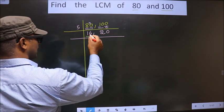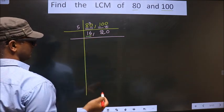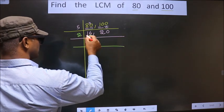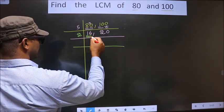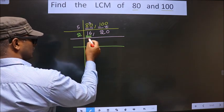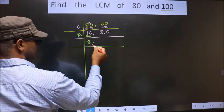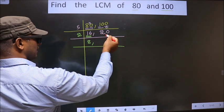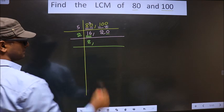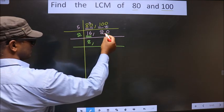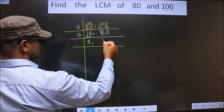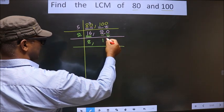Now here the last digit is 6, which is even, so we take 2 here. The first number is 1, which is smaller than 2, so we take 2 digits, that is 16. When do we get 16 in the 2 table? 2 eights are 16. Now the other number — last digit is 0, so this number is also divisible by 2. Here the first number is 2. When do we get 2 in the 2 table? 2 ones are 2. This 0 is carried down.